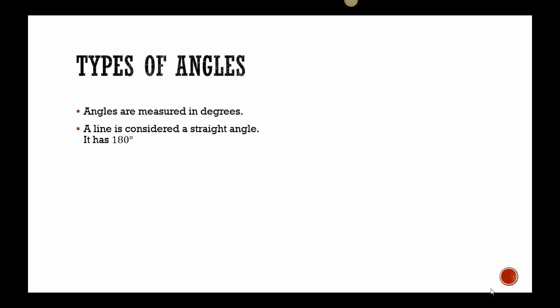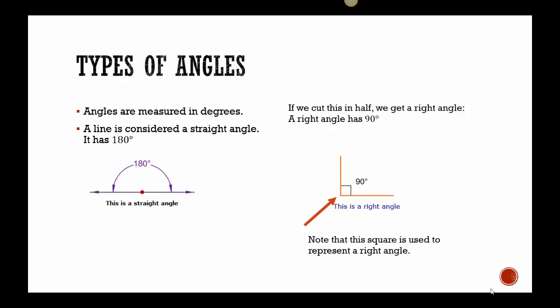A line is considered a straight angle and has 180 degrees, like you can see in the picture. If I cut a line in half, it forms a right angle and it has 90 degrees. Notice this little square when I made the right angle? That shows you that you have 90 degrees. So it won't always be written the 90 degrees. You'll see the square just to indicate when I have a right angle.